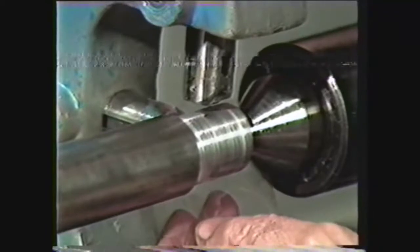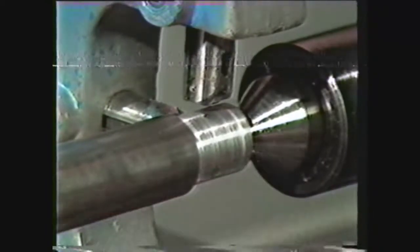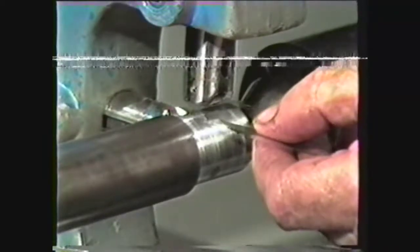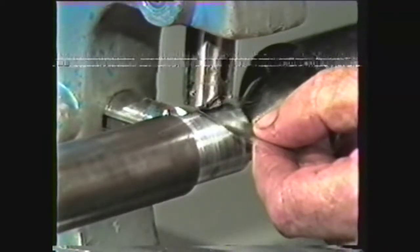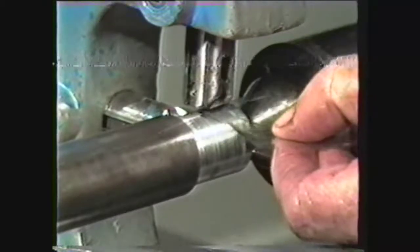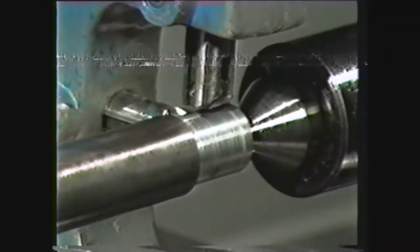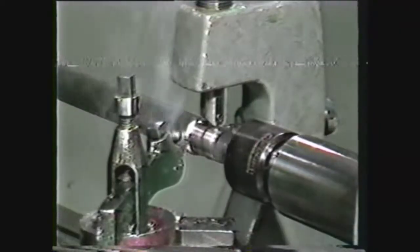Adjust the follower rest jaws to the machined surface of the work with cellophane or a 1/1000 feeler gauge. Considerable care should be taken in adjusting the jaws since the work must turn freely but without play.